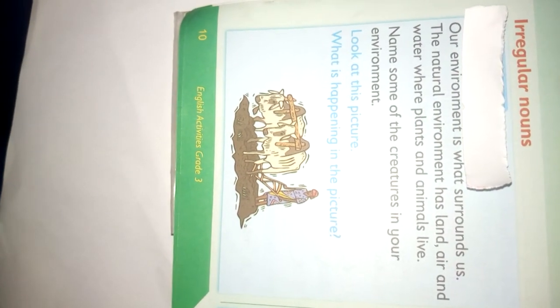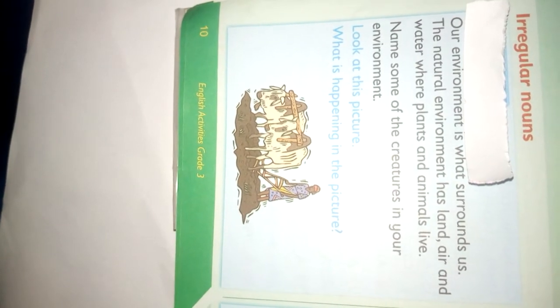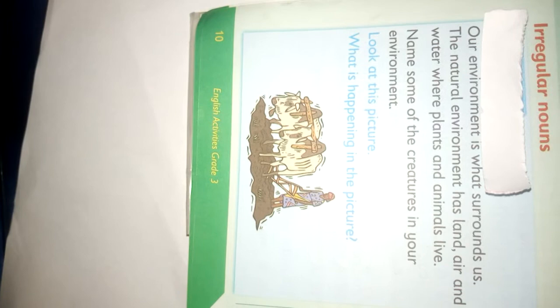Hello, my dear learners, Grade 3. I'm happy today. I want us to talk about irregular nouns. We are going to look at things which are found in our environment — things we see on a daily basis, and others which we see when we visit game parks. Look at this picture.